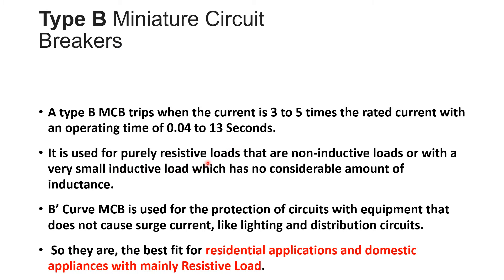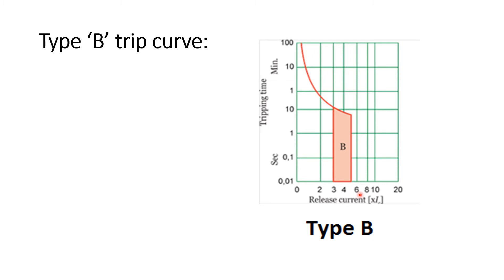It is used purely for a purely resistive loads that are non-inductive loads or with a very small inductive load which has no considerable amount of inductance. So it is very clear that B curve MCB is used for the protection of circuits with equipment that does not cause surge current like lighting and distribution circuits. So it is best fit for residential applications and domestic appliances with mainly resistive loads. So whenever you want to install any MCB for your residential purpose in that case you have to go for type B type MCB.